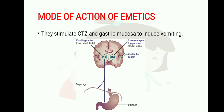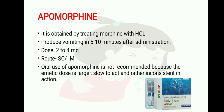Mode of action of emetics: they basically stimulate the CTZ and gastric mucosa to induce vomiting. Apomorphine is a centrally acting emetic obtained by treating morphine with acid. It produces vomiting within 5 to 10 minutes after administration. Dose: 2 to 4 mg, given subcutaneously or IM. Oral use is not recommended because the emetic dose is larger, slow to act, and inconsistent in action.